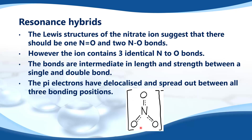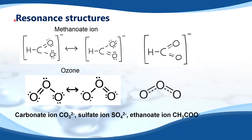Here we have the resonance hybrid structure of the nitrate ion. As you can see, the bonds are intermediate between single and double bonds and they are drawn as a straight line with a dashed line beside it. Here are some more examples of resonance structures.